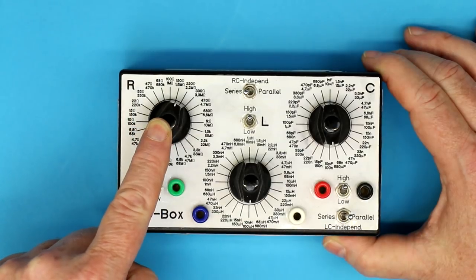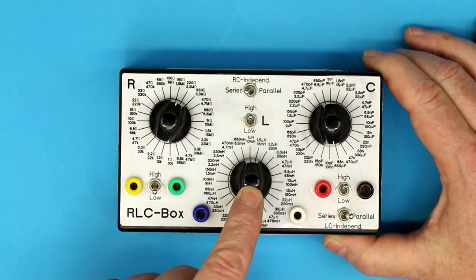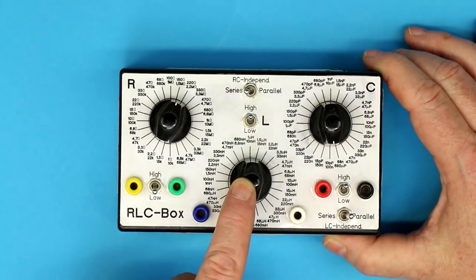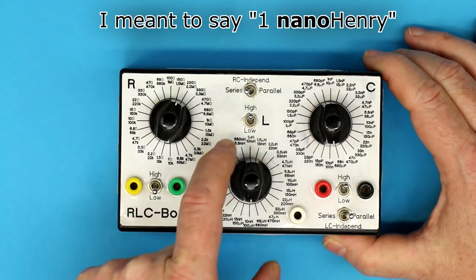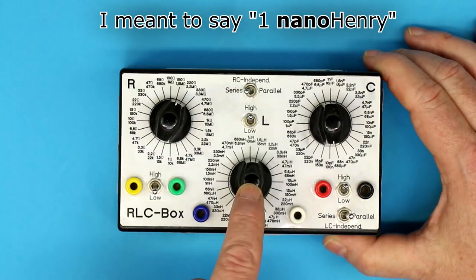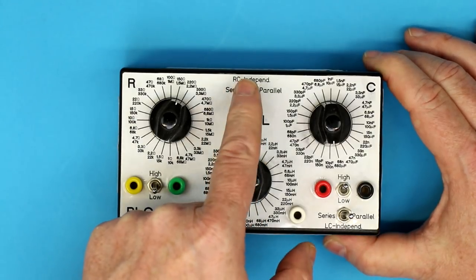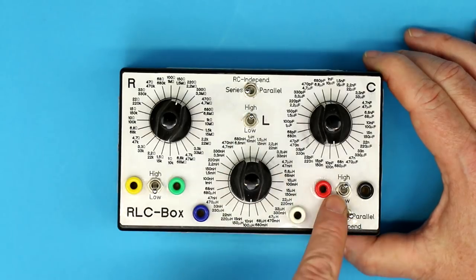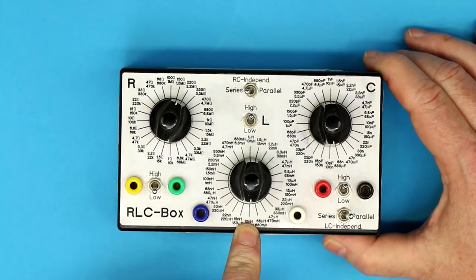So all in all, we get eight decades of resistance, seven decades of inductance. The reason is simply it makes no sense to start at one microhenry, as I did here, because even the leads from the rotary switch to the selector switch and to these two switches have a higher inductance than 10 nanohenries.